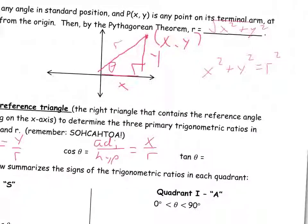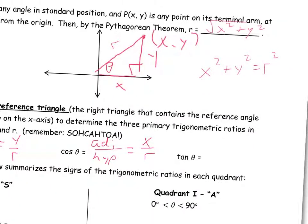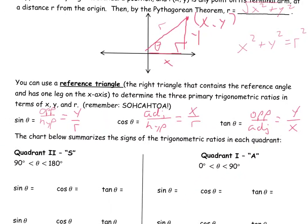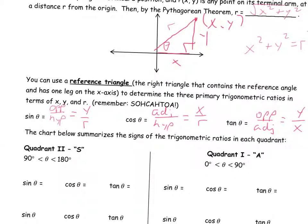And finally, tan theta — we know tan is opposite over adjacent. Looking at the angle theta, the opposite is Y and the adjacent is X. So tan theta equals Y over X. This is a really important idea because now sine, cos, and tan can actually be negative, which we've never seen before.